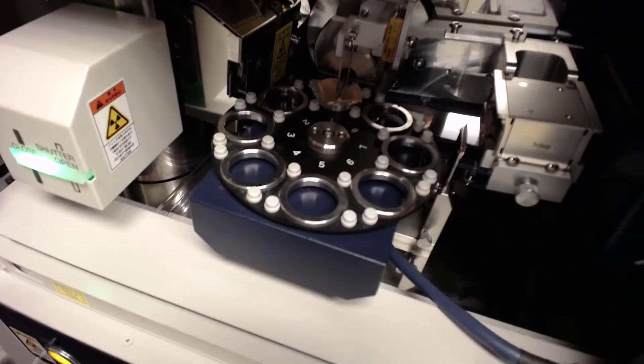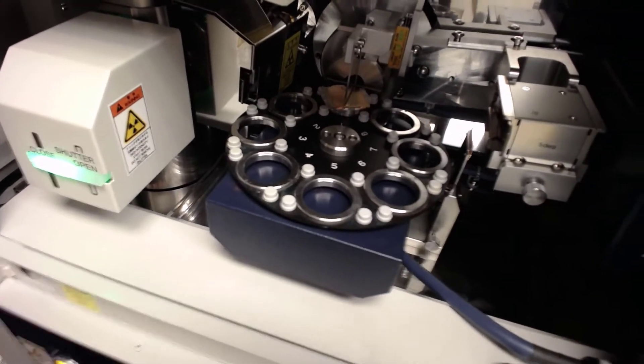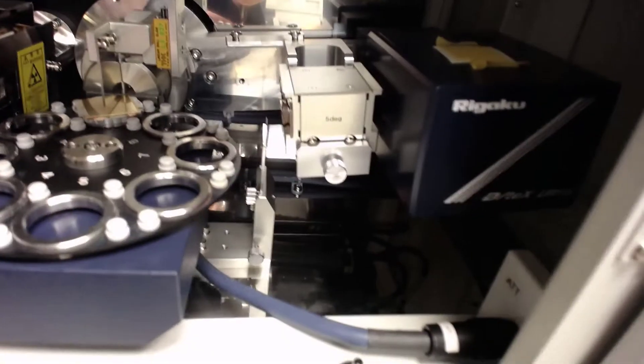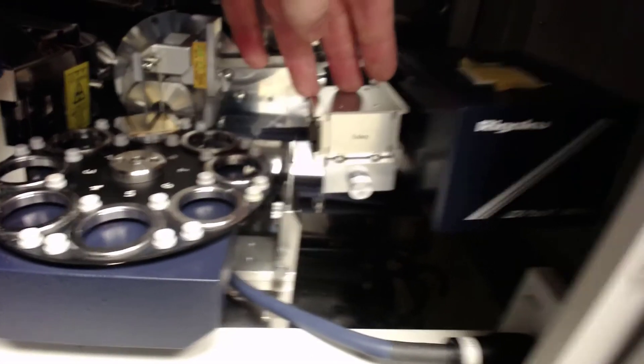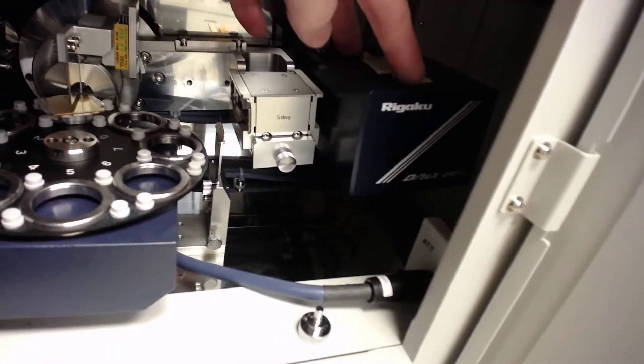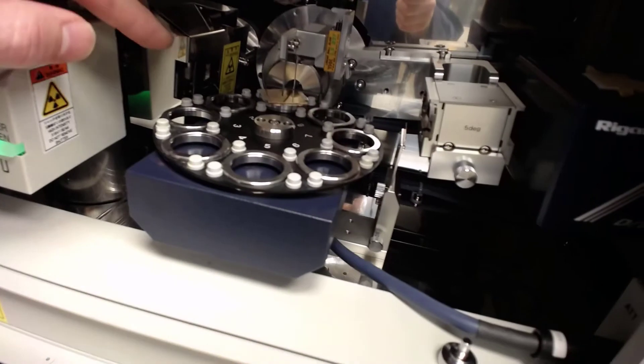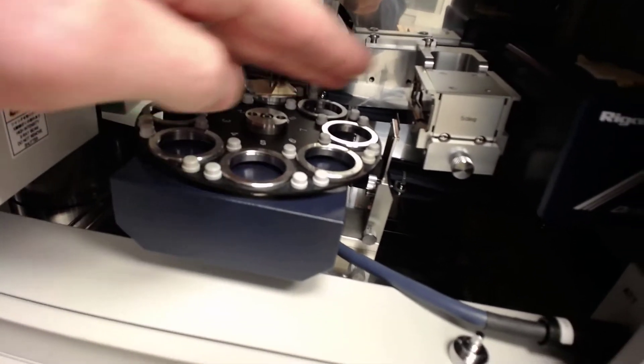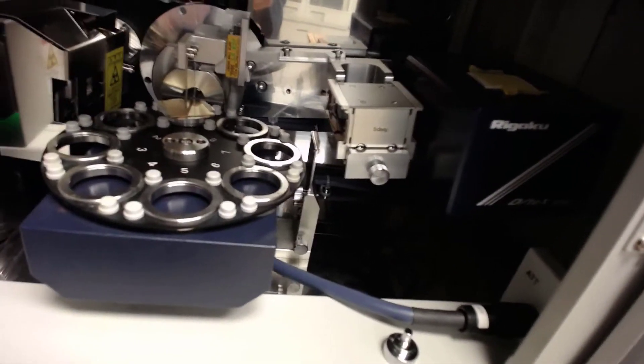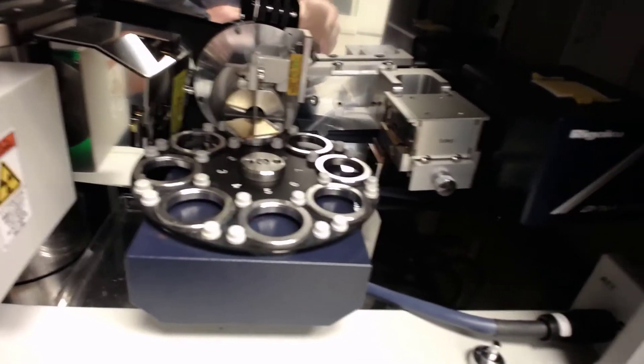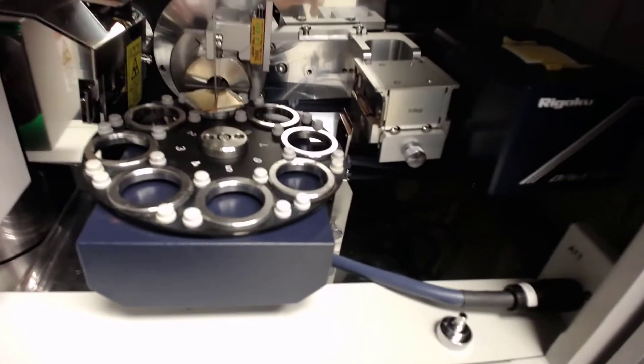In the middle you can see our 8-position auto sample carousel. And then on the right we go on to another set of slits and the detector is over here. So the X-rays will come out, diffract off the sample, and go to the detector for counting how many X-rays were diffracted.